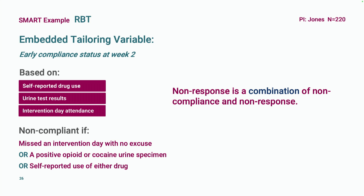The tailoring variable in this study combines whether the intervention is working and whether the pregnant person is adhering — two different things. It's based on three criteria, any of which can trigger a non-compliance classification: missing an intervention day without contacting their counselor, having a positive drug test on a urine specimen, or self-reporting drug use. Any of those three might trigger non-compliance.